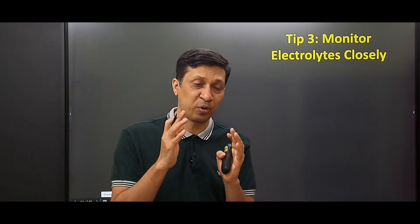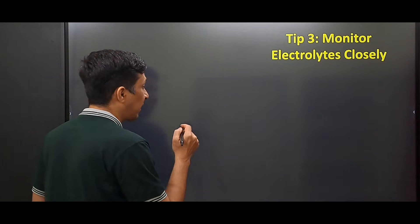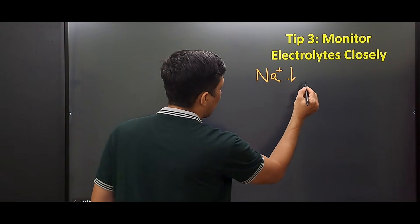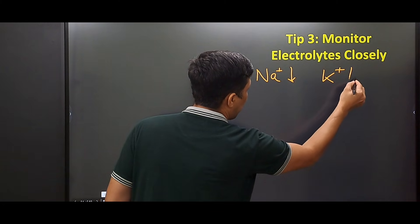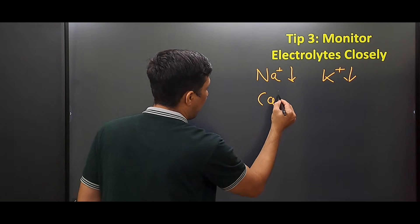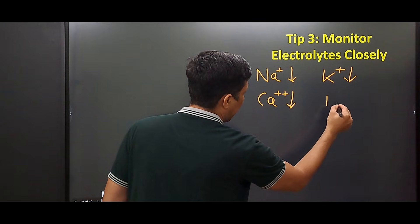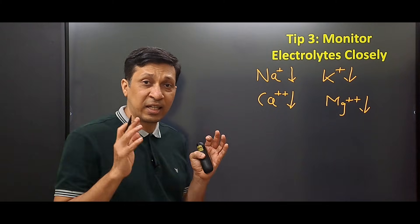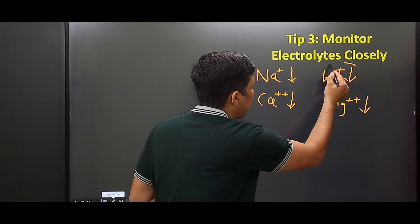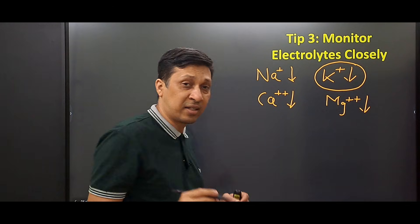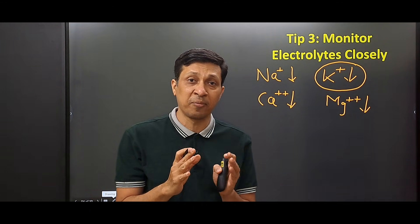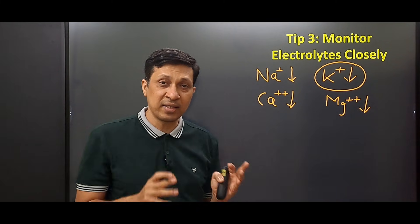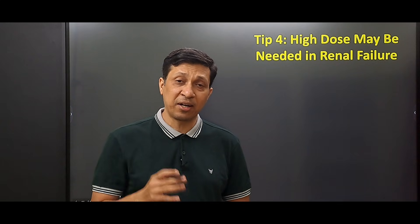The third and most important tip is that you have to monitor electrolytes very closely in a patient who is on furosemide. The electrolyte imbalances that can occur include hyponatremia, hypokalemia, hypocalcemia, and hypomagnesemia. Of all these, hypokalemia is very important and you have to monitor it closely — especially in a patient who is on digoxin, because the patient can land up in digoxin toxicity when there is hypokalemia.